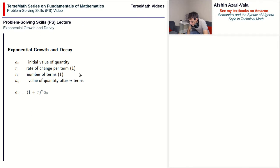n is the number of terms. For example, if you add interest once every year and two years go by, then the number of terms will be two. If three years go by the number of terms will be three, and so on. And aₙ is the final value of that quantity after n terms go by.